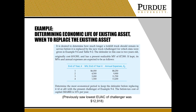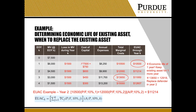In this example, we want to determine the economic life of an existing forklift. We reference a previous problem where the lowest EUAC of the Challenger forklift was $12,918, and we're also given a table of costs and market values for the Defending forklift. We set up a table calculating the loss in market value during each year, the cost of capital, and the total marginal cost. We can calculate the EUAC to find the economic life of the Defender, which is one year in this case, because it's the lowest value for EUAC. Looking at the total marginal cost compared to the lowest EUAC of the Challenger, we see that in year three the total marginal cost of the Defender is more expensive, so we want to replace the Defender in year two.